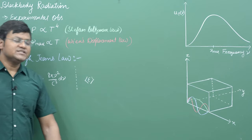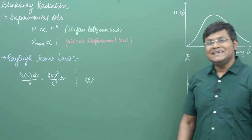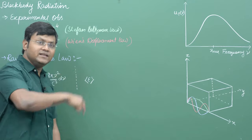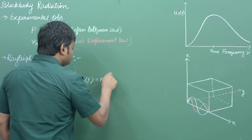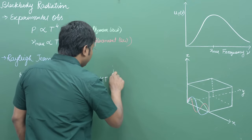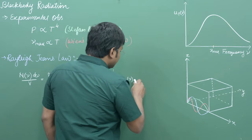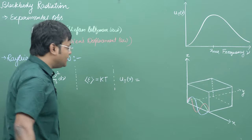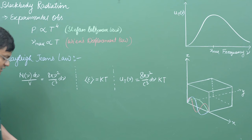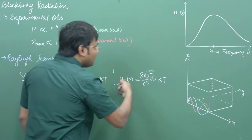Rayleigh and Jeans multiplied this number of standing waves by the average energy of the standing waves, borrowed from classical statistical mechanics — specifically the law of equipartition of energy — which says the average energy associated with the harmonic oscillators on the cavity walls is kT. So the total spectral energy density comes out to be 8πν²/c³ · kT · dν. This energy density is directly proportional to ν², giving a parabolic relationship.